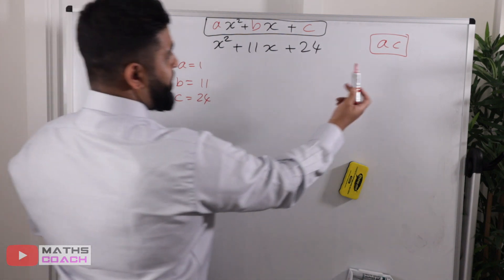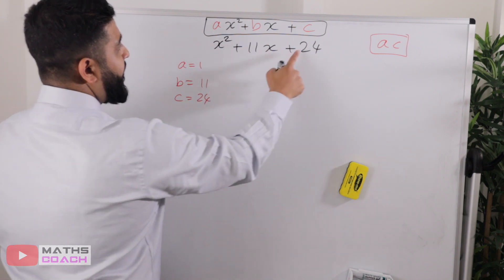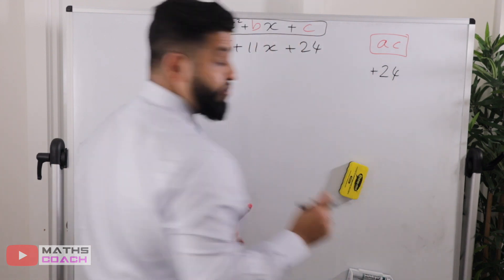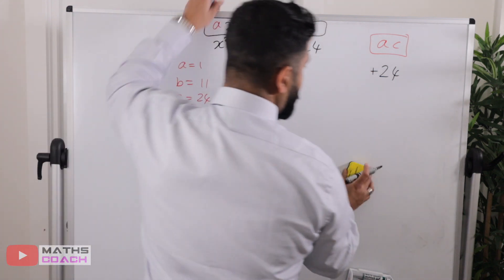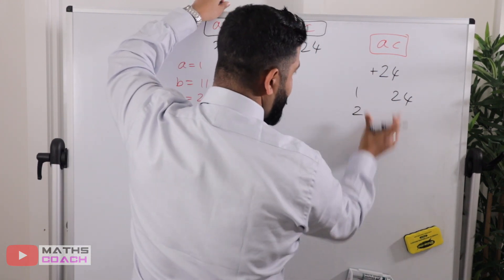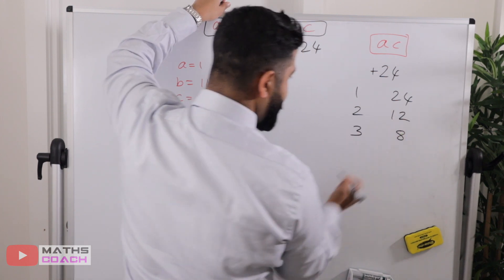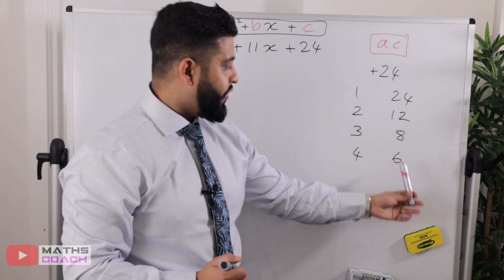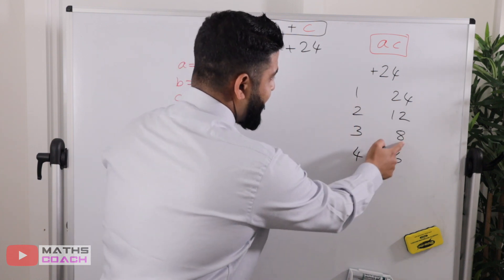We are going to multiply a and c: 1 times 24 gives us positive 24. It's really important to include the sign — whether it's a positive or negative 24. Next, we write down the factor pairs of 24 systematically: 1 and 24, 2 and 12, 3 and 8, and 4 and 6. You'll notice you're nearing the end of your factor list when the numbers start getting closer together.